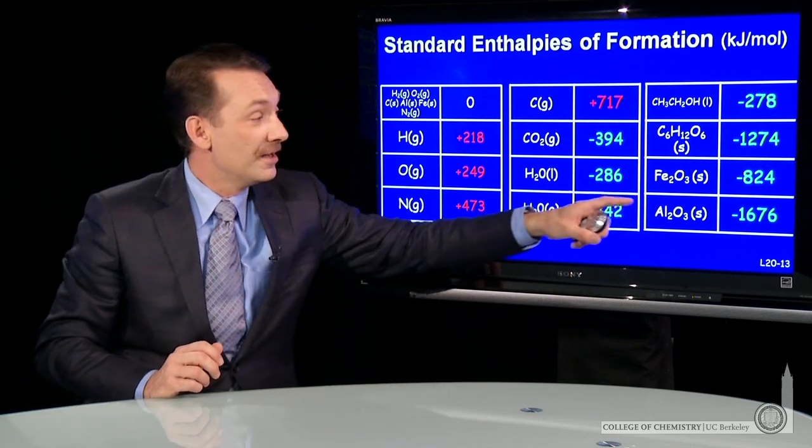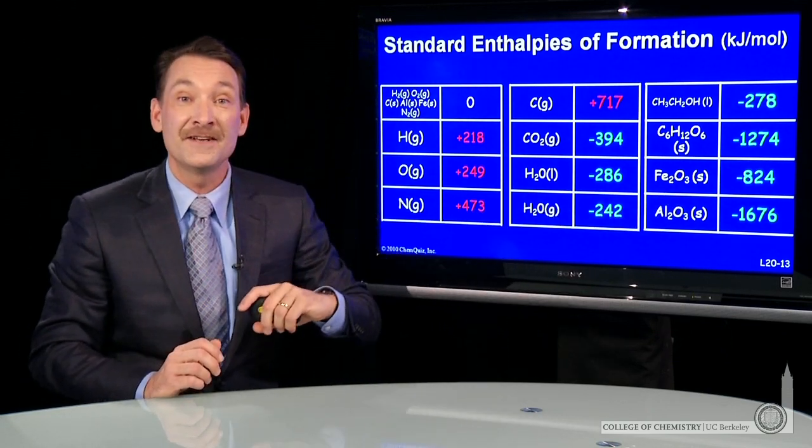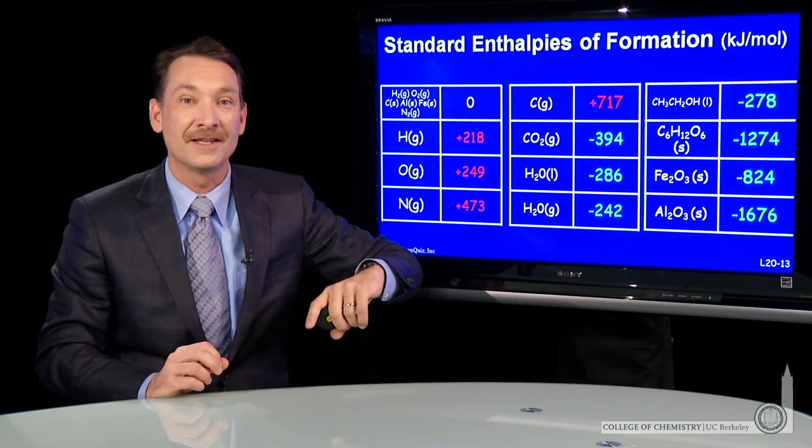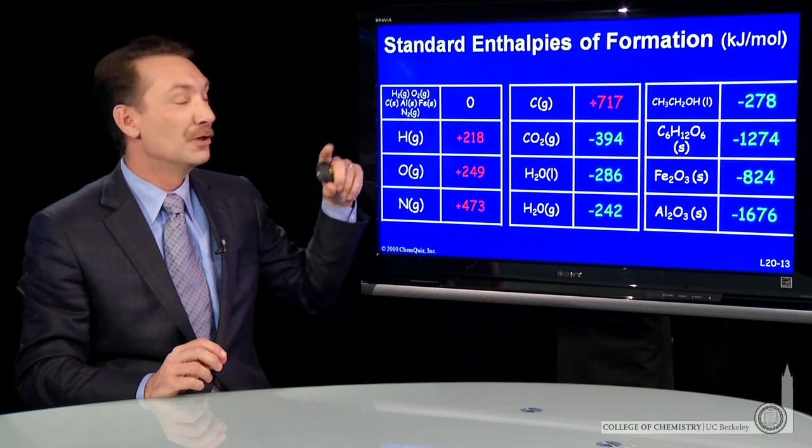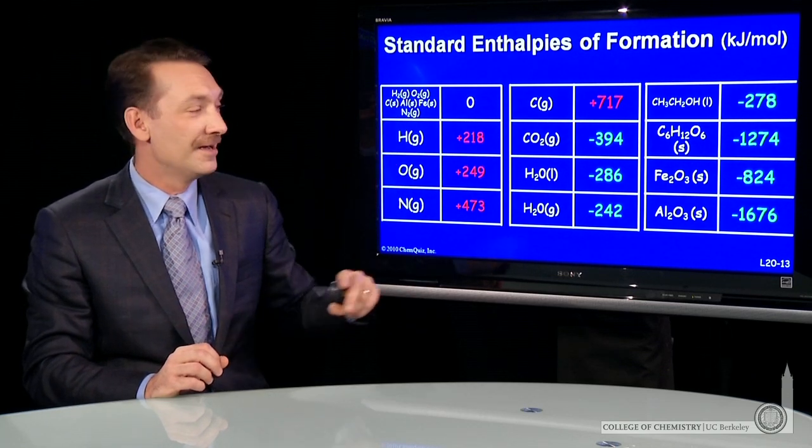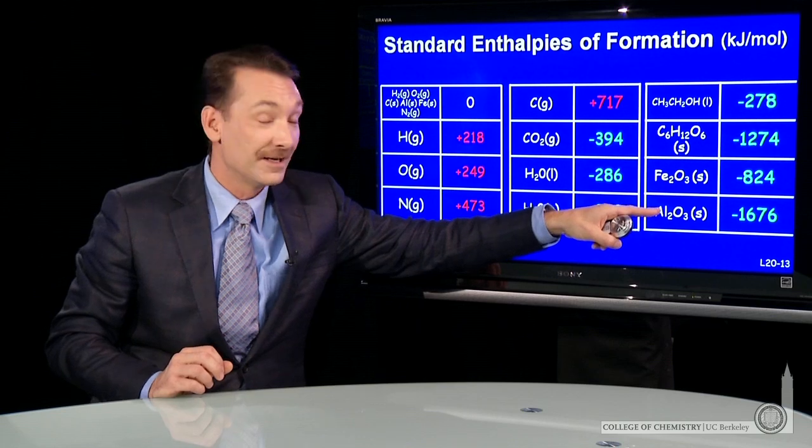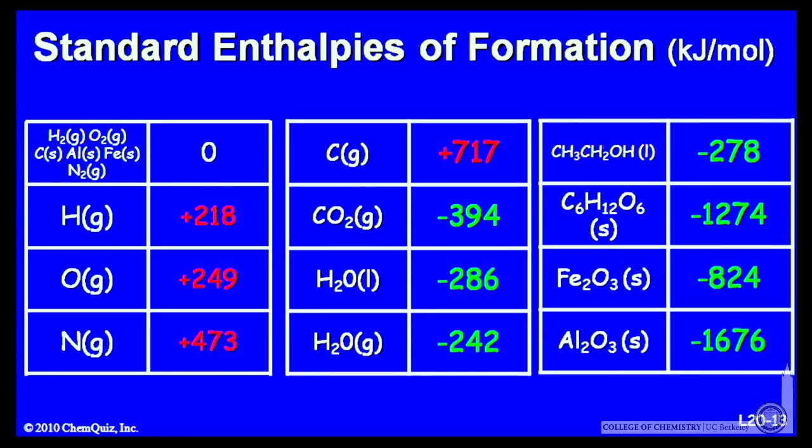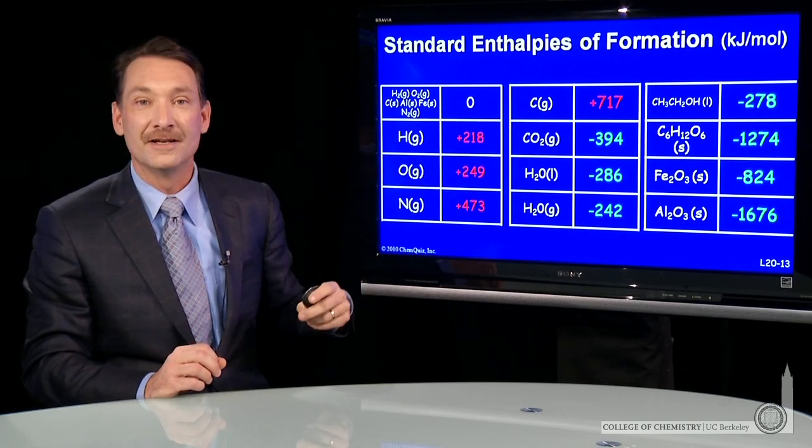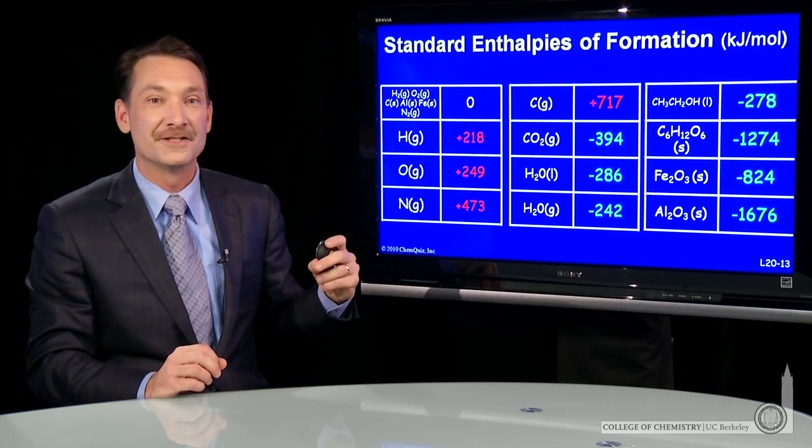Aluminum oxide—1,676 kilojoules are released when every mole of aluminum oxide solid is made from aluminum solid and oxygen gas in their standard states. So that's a very dramatic release in energy for one mole of a compound. So enthalpies of formation for elements and atomic compounds in their standard states and some atomization of elements from their standard states.